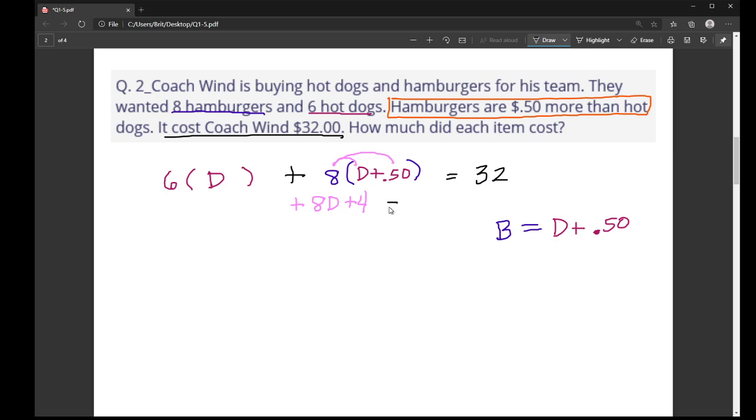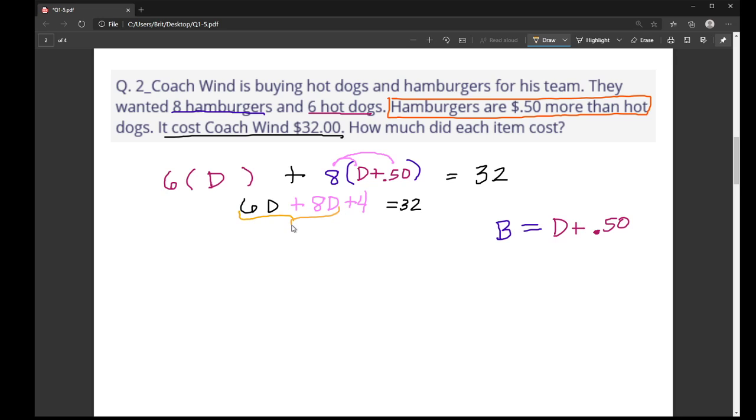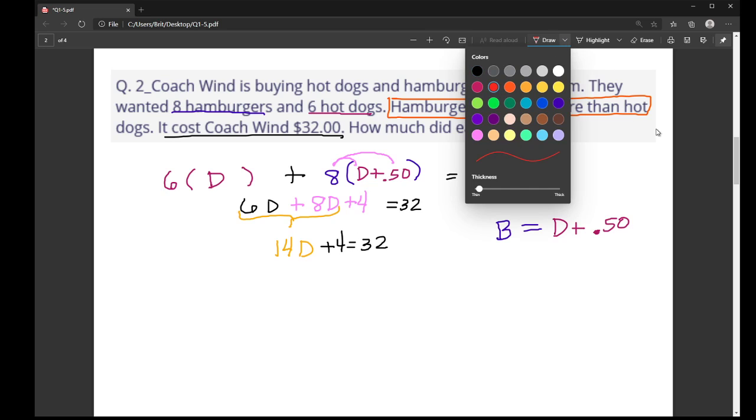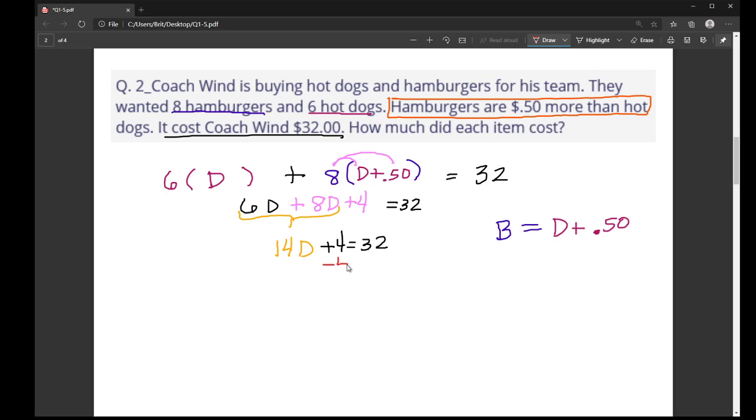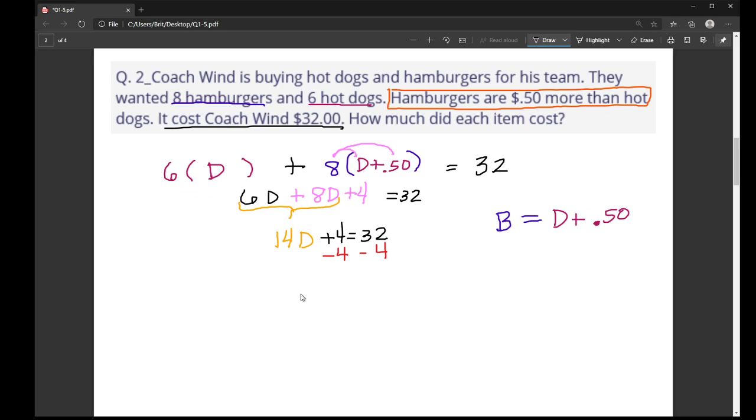So then the rest of the problem, I still have an equals 32. And here, 6 times D is 6D. So now here, I have some like terms that I can go ahead and combine. So 6D plus 8D is 14D. I still have my plus 4 and equals 32. So now I have to get rid of any addition or subtraction before I can get rid of the multiplication here. So I'm going to subtract 4 from each side of the equal sign.